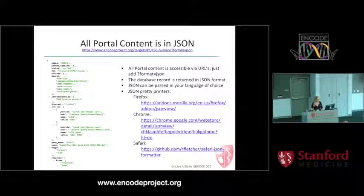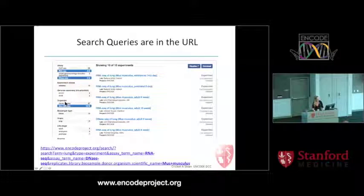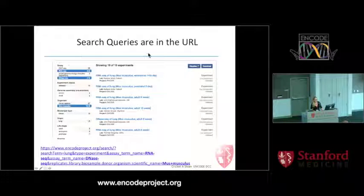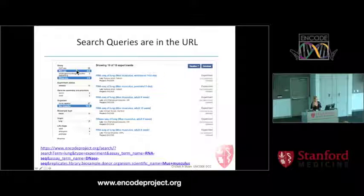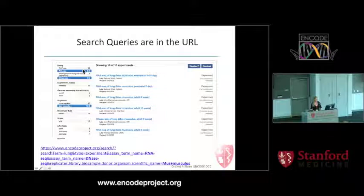The other key take-home is that search queries are building a URL for you as you click on the facet boxes. Clicking RNA-seq adds 'assay_term_name=RNA-seq' to the URL. Clicking DNA-seq adds 'assay_term_name=DNA-seq'. When you click two items within a group, that functions as an OR. When you click items within different groups, that functions as an AND. So that example would get anything that is RNA-seq or DNA-seq, and that also must be mouse.